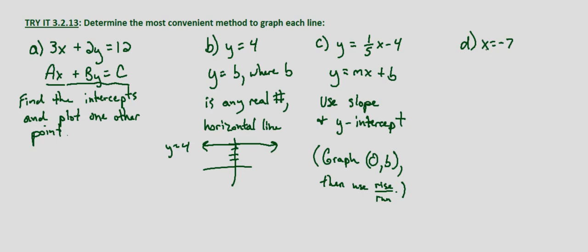So x equals negative 7. Well this is similar to part b. We have when x equals b where b is any real number, it's a vertical line at x equals b. So in other words we just recognize that with x equals negative 7, we'd be going to 1, 2, 3, 4, 5, 6, negative 7 and then we would have a vertical line x equals negative 7.